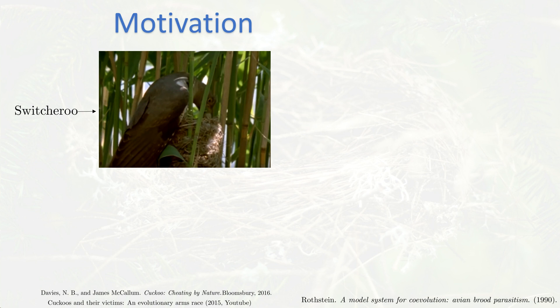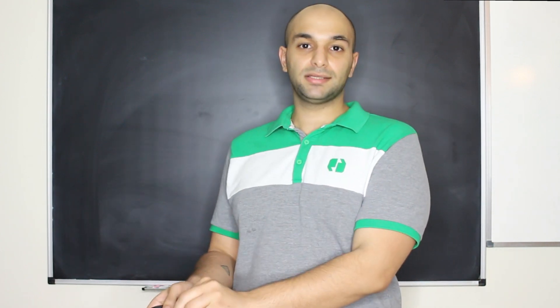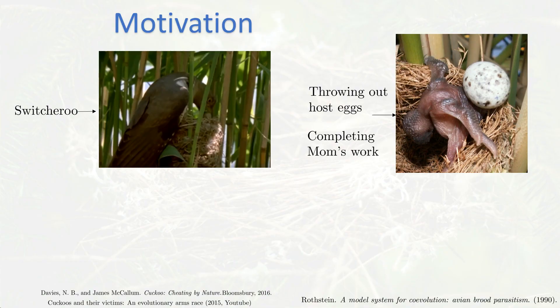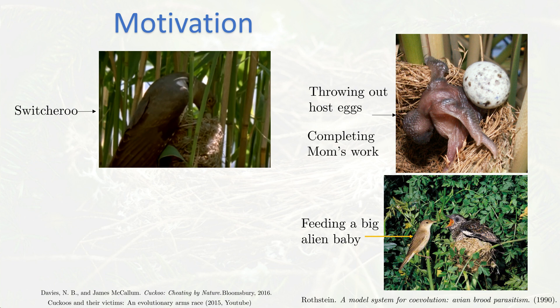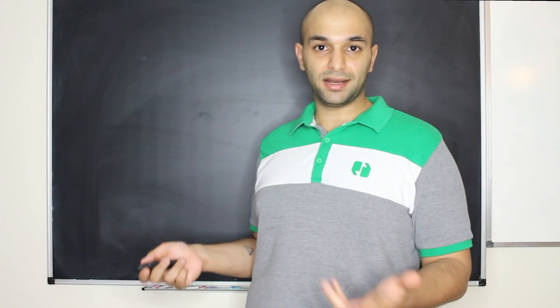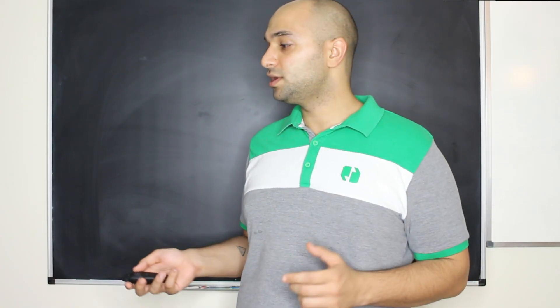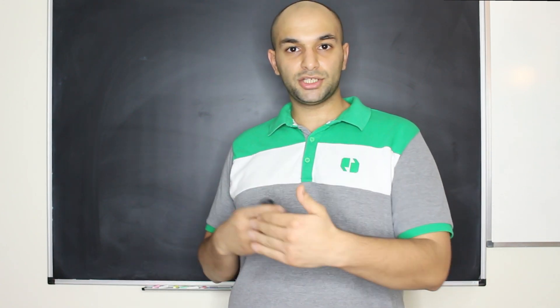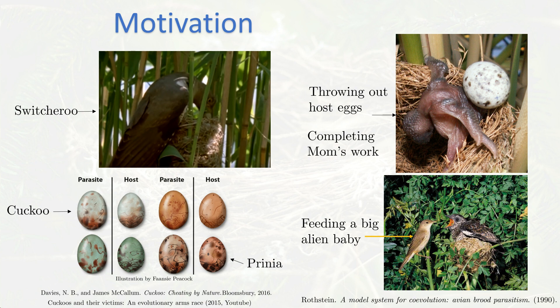Cuckoos are nature's cheaters. About 40% of them do not raise their own eggs — instead they just put their eggs in somebody else's nest, and when the eggs hatch they throw out all the other eggs and let the host raise them. You end up with a situation where a little bird is feeding a giant alien baby, thinking it's her own. This leads to a co-evolution where cuckoos try to put fake eggs into nests and the host tries to detect and reject them.